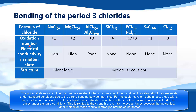Next is the oxidation number, similar to the period 3 oxides. Sodium is +1, magnesium is +2, aluminium is +3, silicon is +4. In PCl₅ the phosphorus is +5. In PCl₃ the phosphorus is +3. In S₂Cl₂ the sulfur is +1. And because Cl₂ is an element, it has an oxidation number of 0.